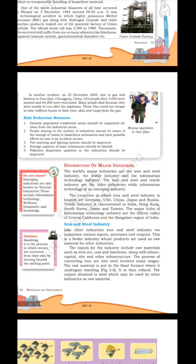Risk reduction measures: Densely populated residential areas should be separated far away from industrial areas. People staying in the vicinity of industries should be aware of the storage of toxins or hazardous substances and their possible effects in case of an accident. Fire warning and fighting systems should be improved. Storage capacity of toxic substances should be limited. Pollution dissipation qualities in the industry should be improved.